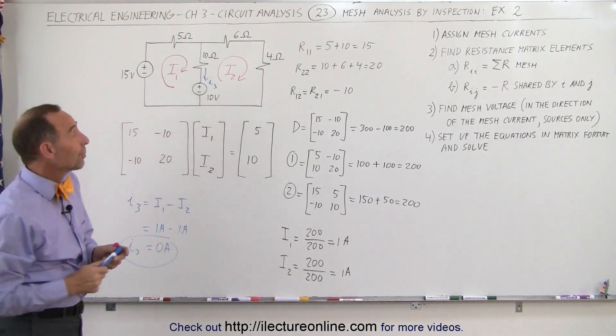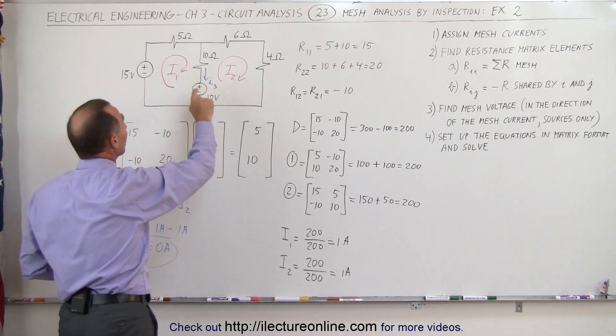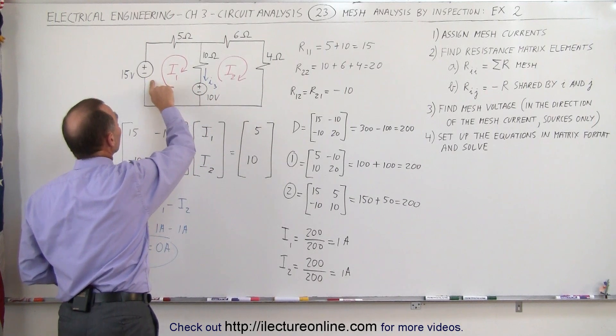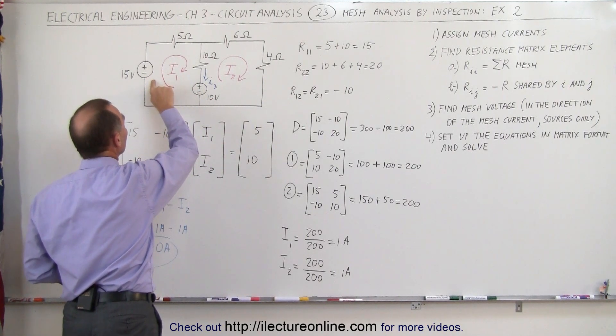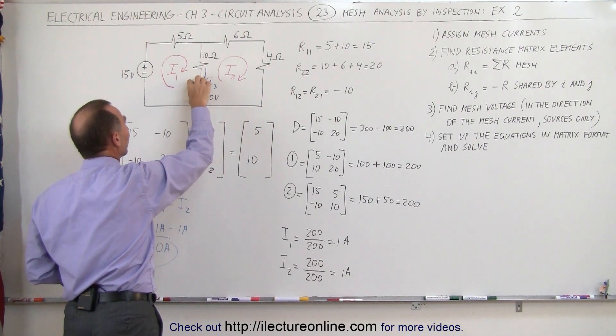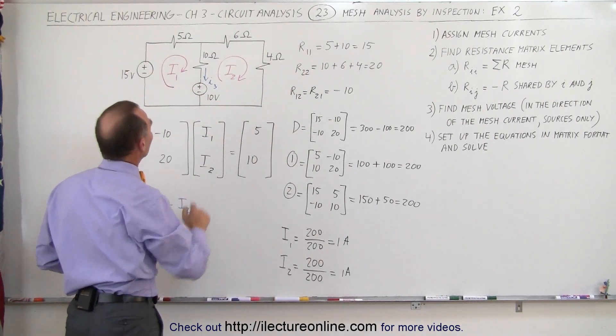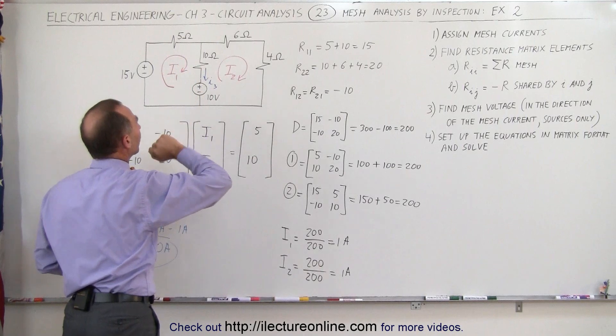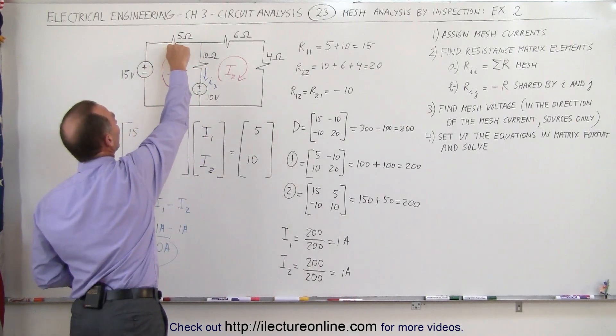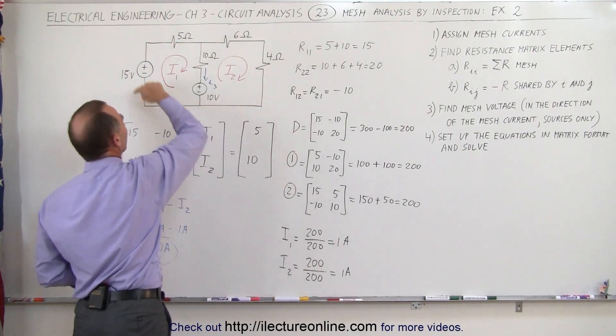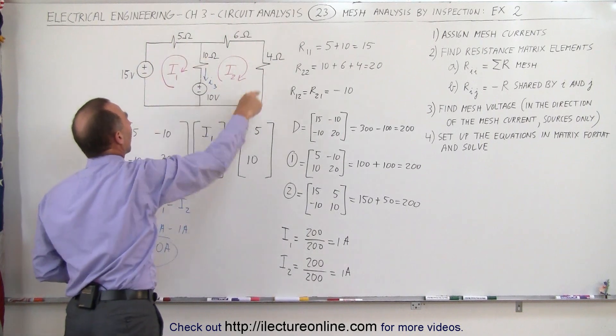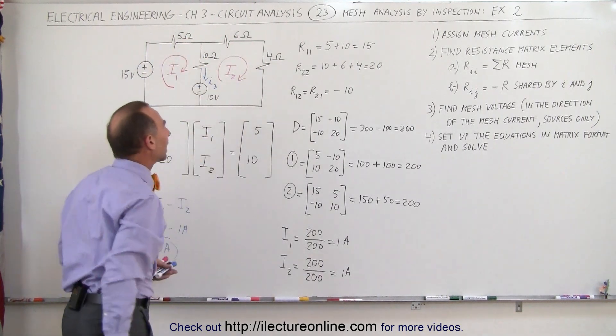Which is kind of strange when you think about it, because there is a voltage source, but it turns out that the other voltage source overrides this voltage source's capability of driving current through it in either direction, so therefore no current flows through this branch. One amp flows this way, one amp flows this way, so it turns out there's one amp of current flowing in the outside loop, and none of it through the branch in the middle.